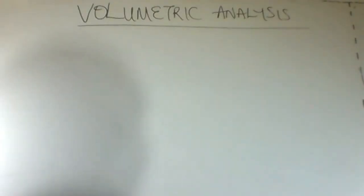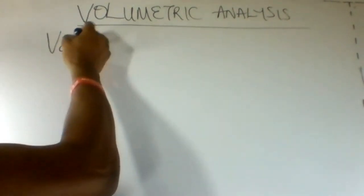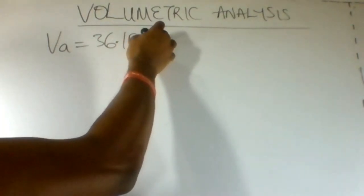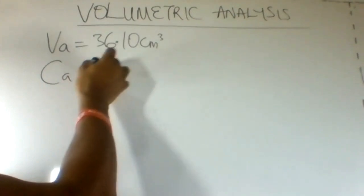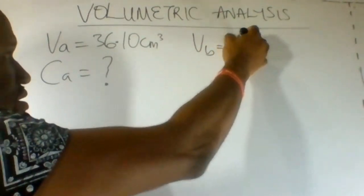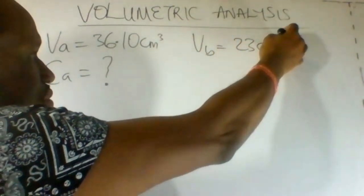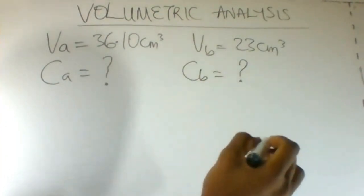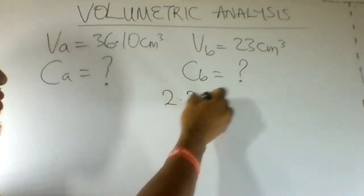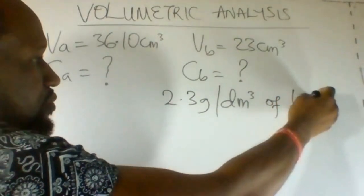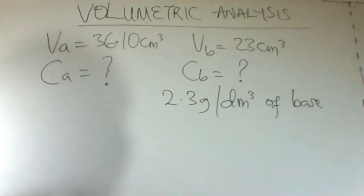Our first step is to write out the values given in the question. The volume of the acid is given as 36.10 cm³. The concentration of the acid is not given. Volume of base is given as 23 cm³. We're not given the concentration of the base directly, but we're given 2.3 grams per dm³ of the base.